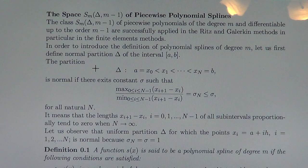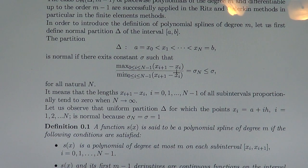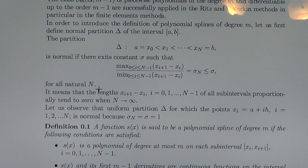let us first define a normal partition Δ of the interval [a, b]. The partition Δ by the points x_0, x_1, ..., x_n is normal if there exists a constant σ such that the maximum of the length of the subintervals x_{i+1} minus x_i divided by the minimum of the length of all subintervals equals σ_n, which depends on n, but is less than or equal to a constant σ independent of n. That means this inequality holds for all natural n.